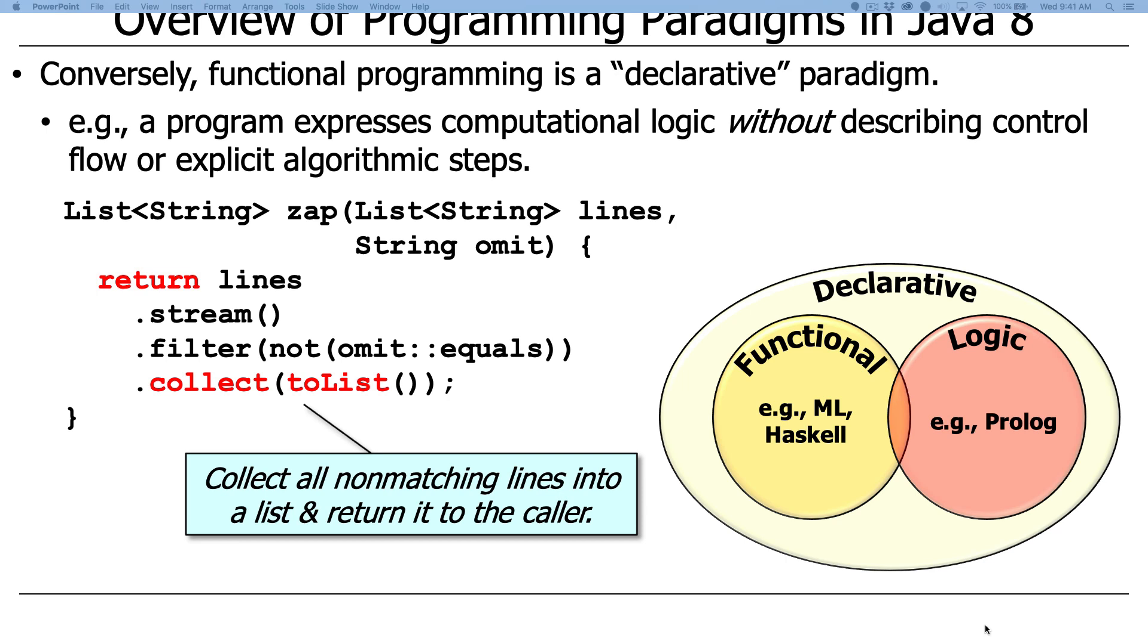Then the final thing we do is we collect that stream into a list, and we return that back as the return result from zap. If you look at this, a couple things to note. Number one, we don't say anything about how to do it. We just say what we want to have done. If you're familiar with functional programming, it's like, oh yeah, that's obvious. If you're not familiar with functional programming, and you've mostly worked with that sequential accumulator anti-pattern we talked about, you're probably like, what the heck is that, and how do I understand this? Don't worry, we'll cover all that shortly.